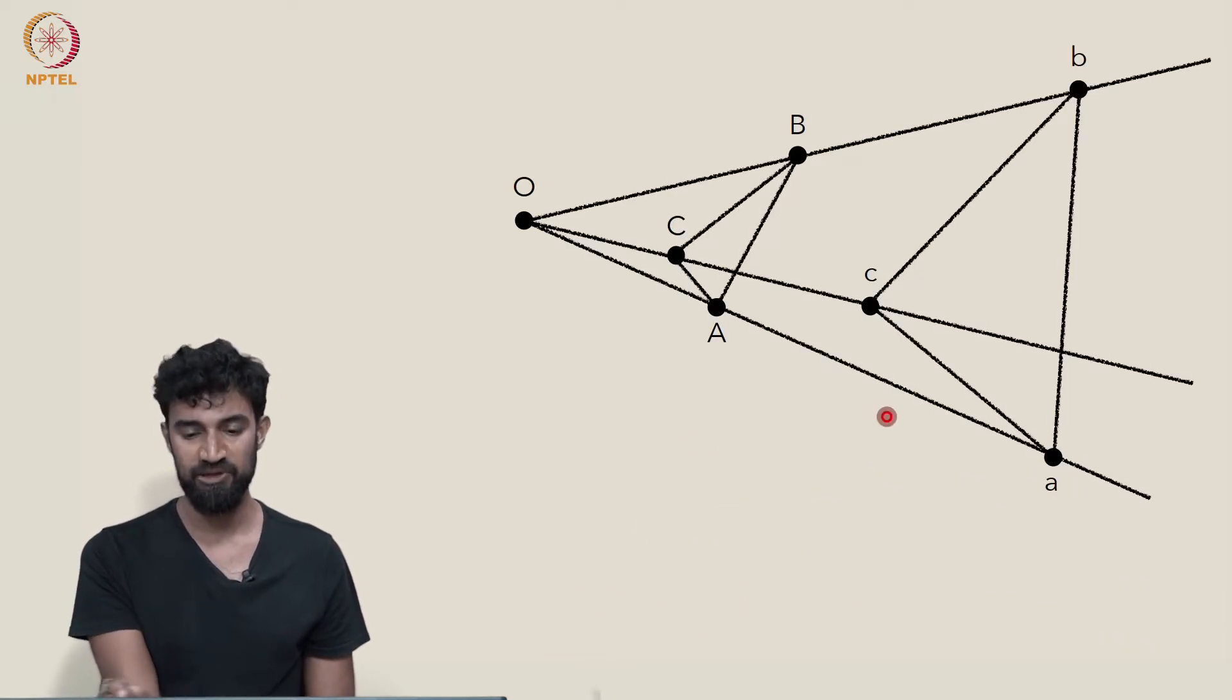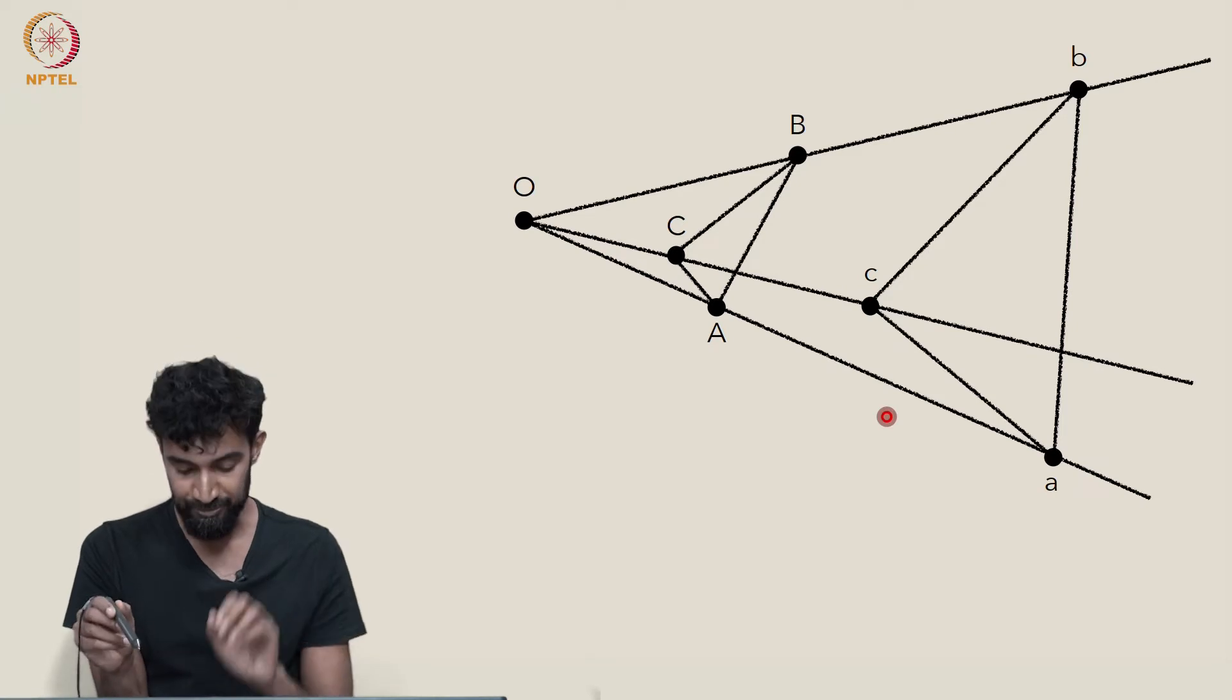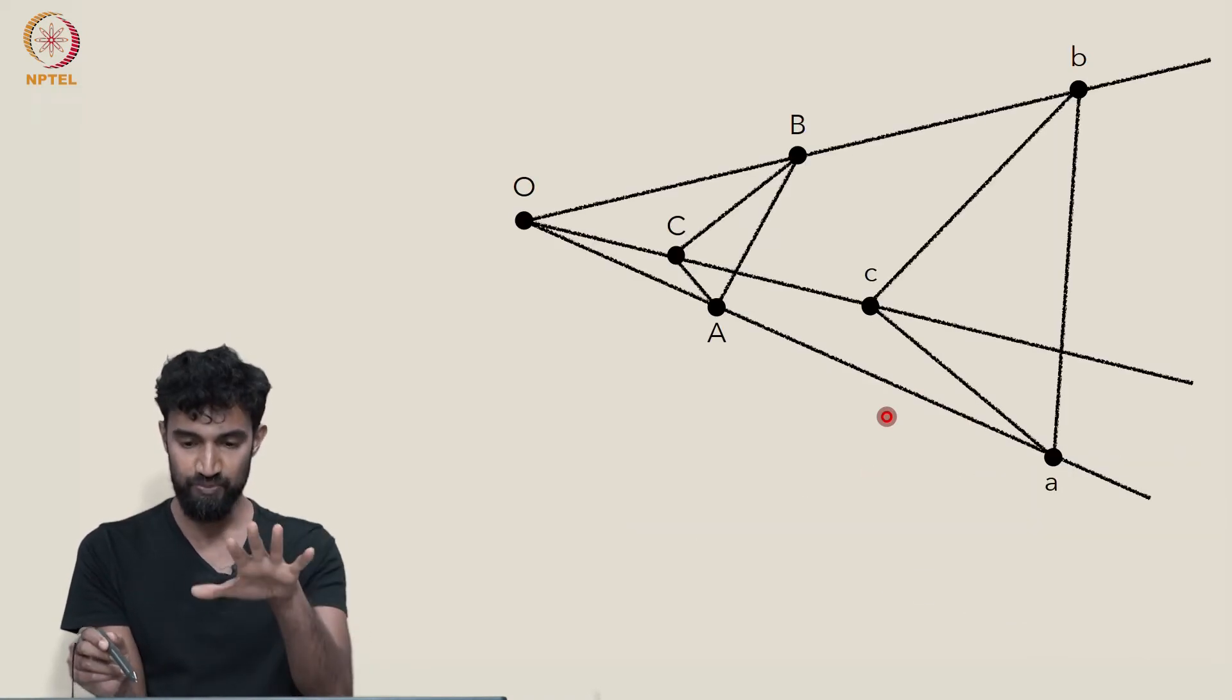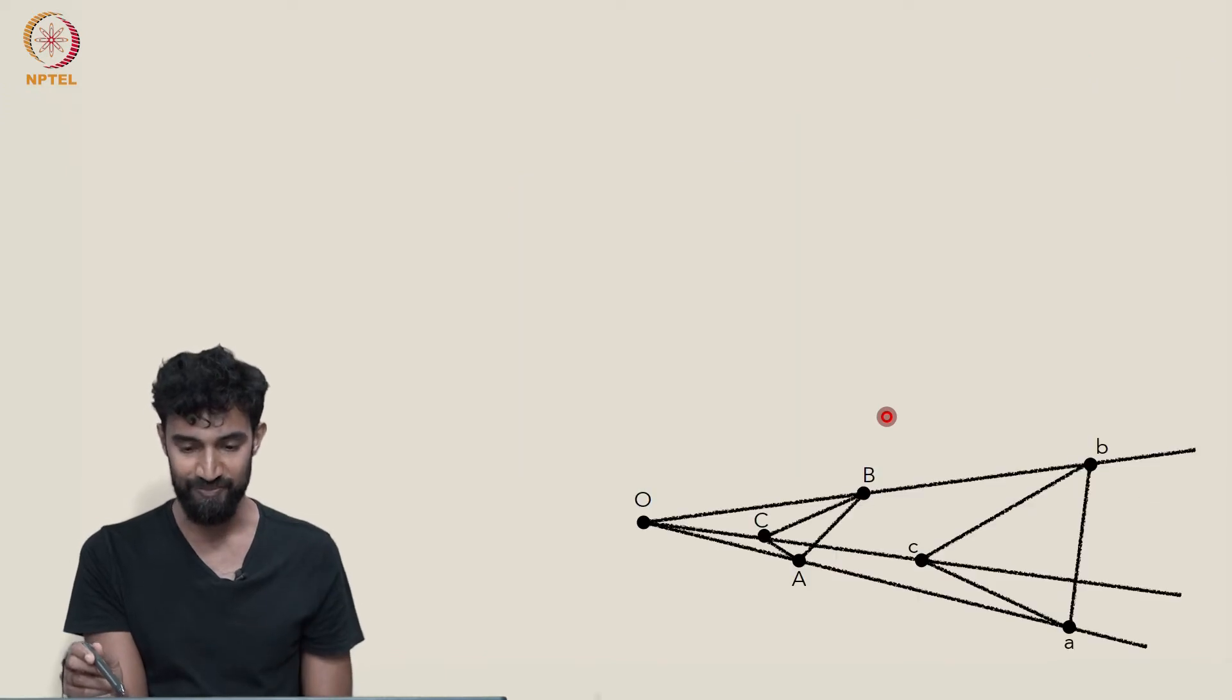So let's imagine that this plane that they lie on is the ground plane in P3. So this diagram I just drew, we're just putting it on the ground, on the floor, in P3.